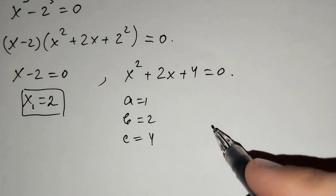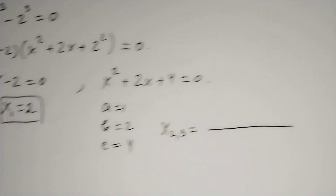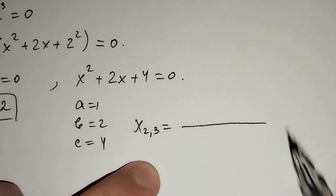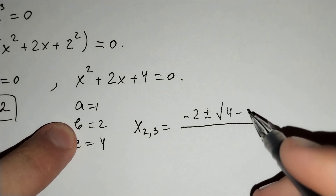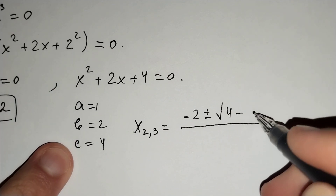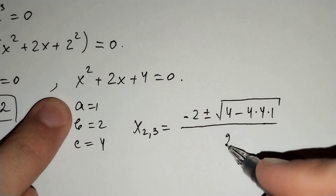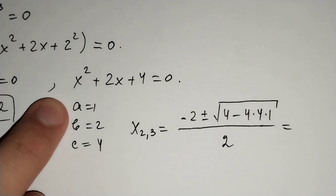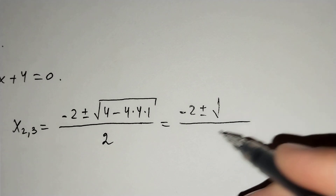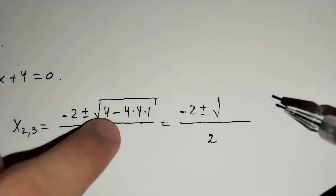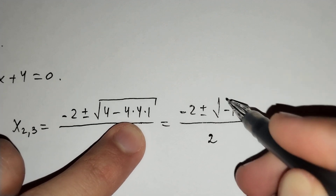For the quadratic formula, x₂ and x₃ equals to negative b plus or minus the square root of b squared minus 4ac over 2a, which equals to minus 2 plus or minus the square root of 4 minus 16, giving us negative 12, over 2.